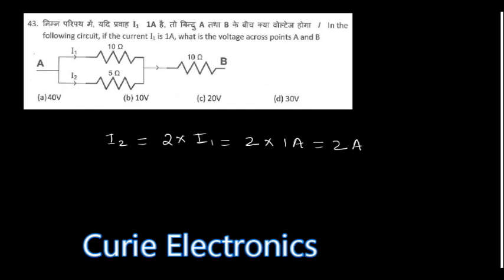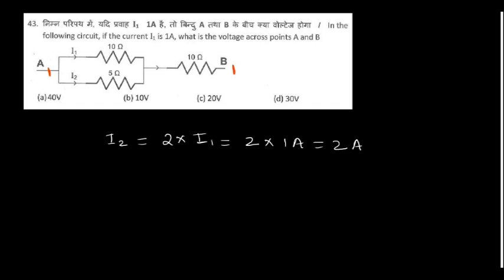In the following circuit, if the current I1 is 1 amp, what is the voltage across points A and B? If you place a multimeter between A and B, what is the voltage drop? We need to find the total current I. I1 is given as 1 amp.